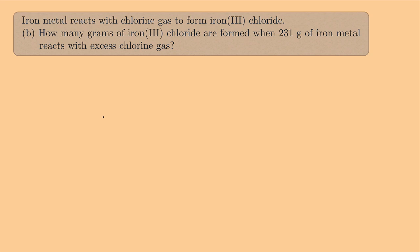Now we're going to look at part B. How many grams of iron(III) chloride are formed when 231 grams of iron metal reacts with excess chlorine gas? So let's start by rewriting the equation that we had. So that was 2Fe(s) + 3Cl₂(g) → 2FeCl₃(s).